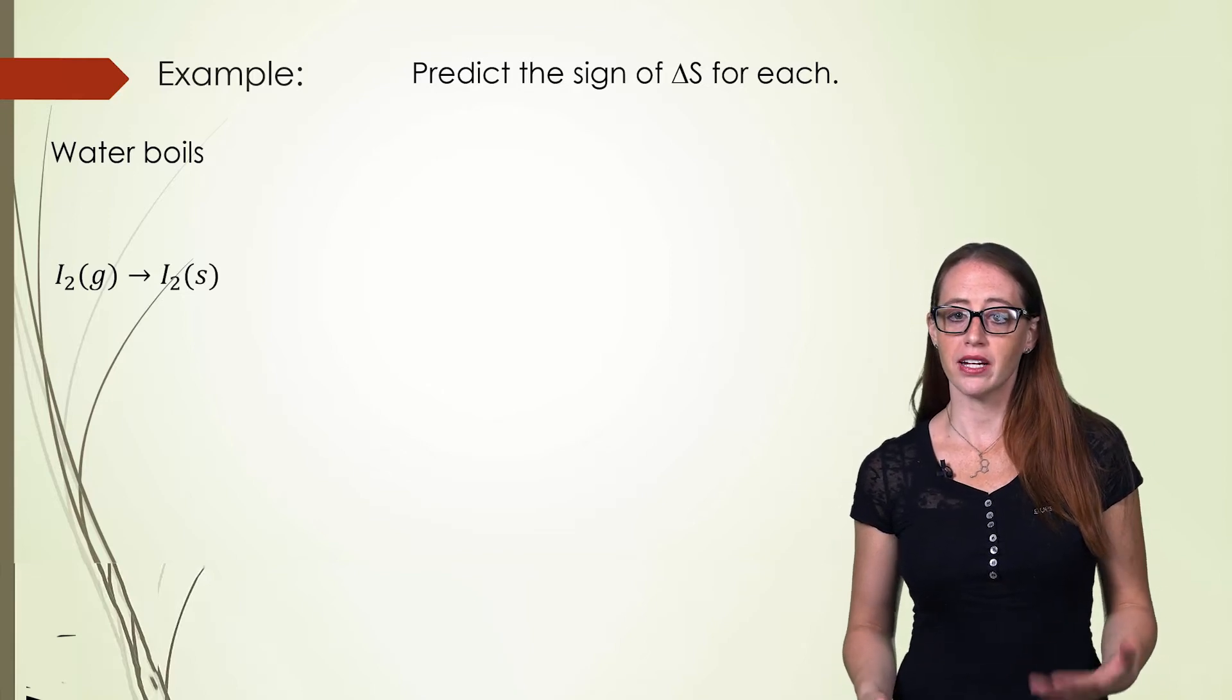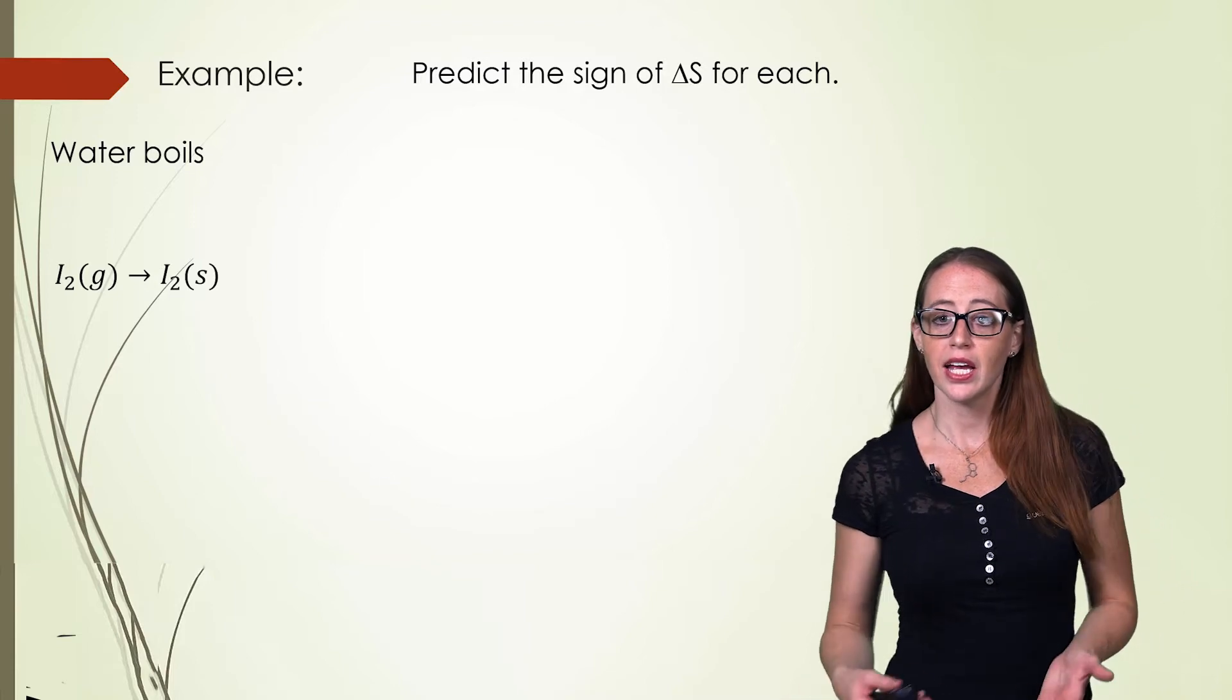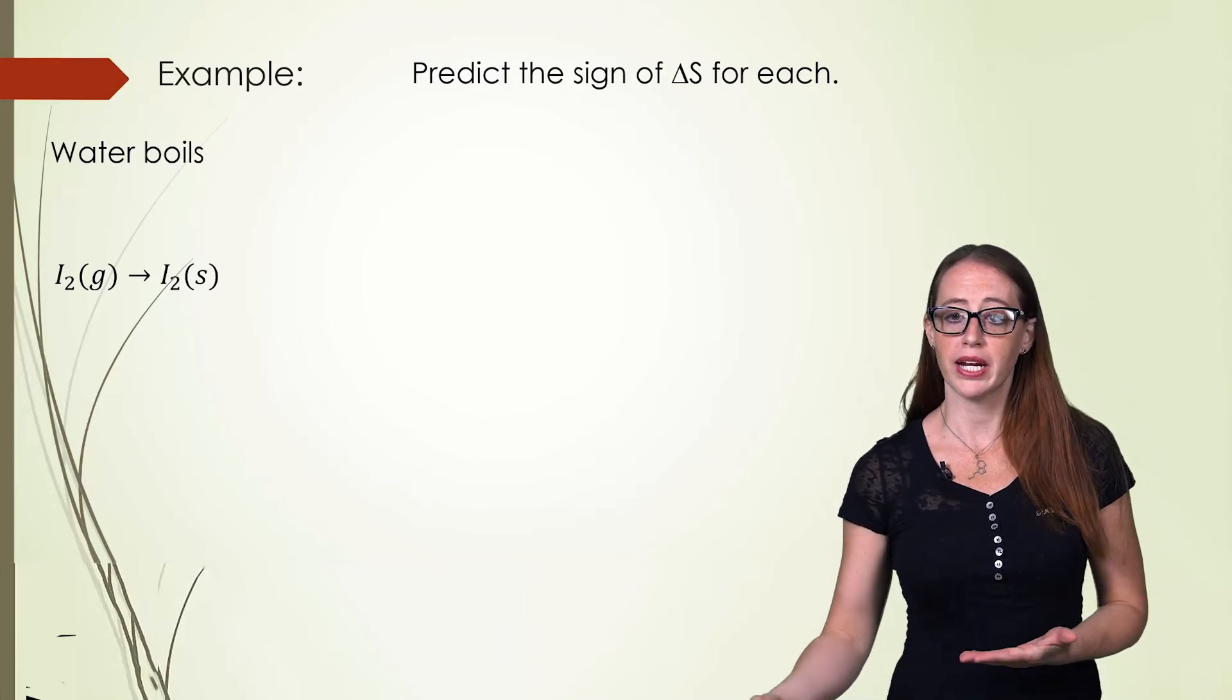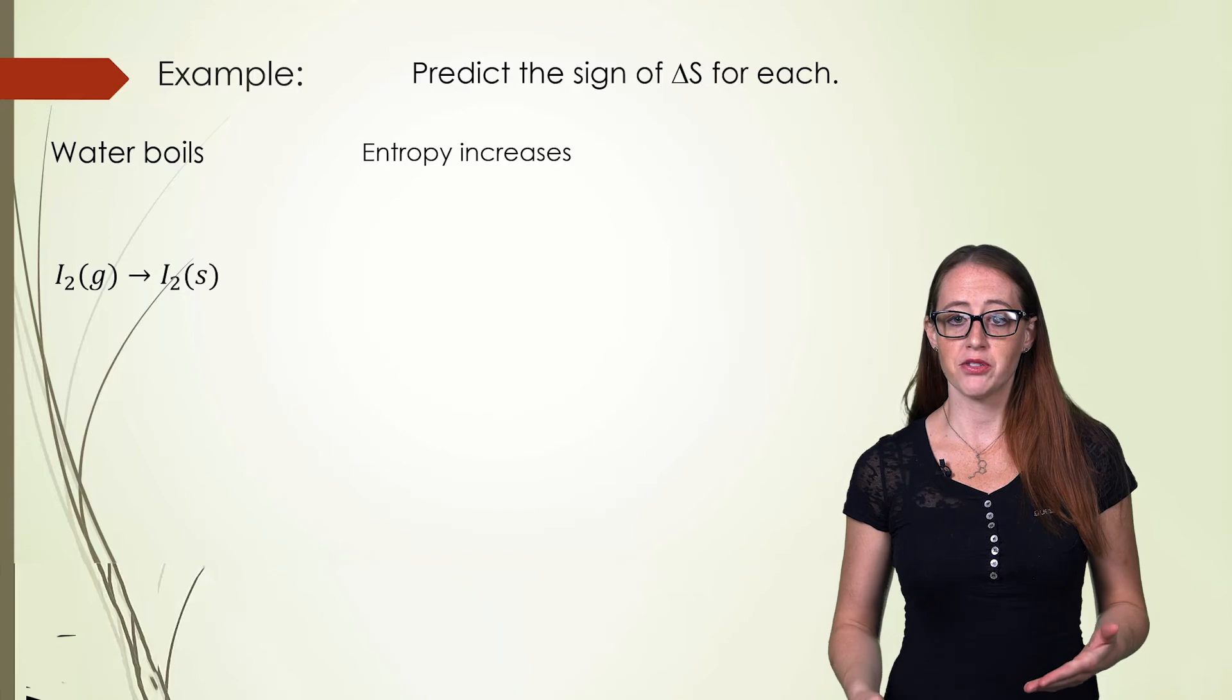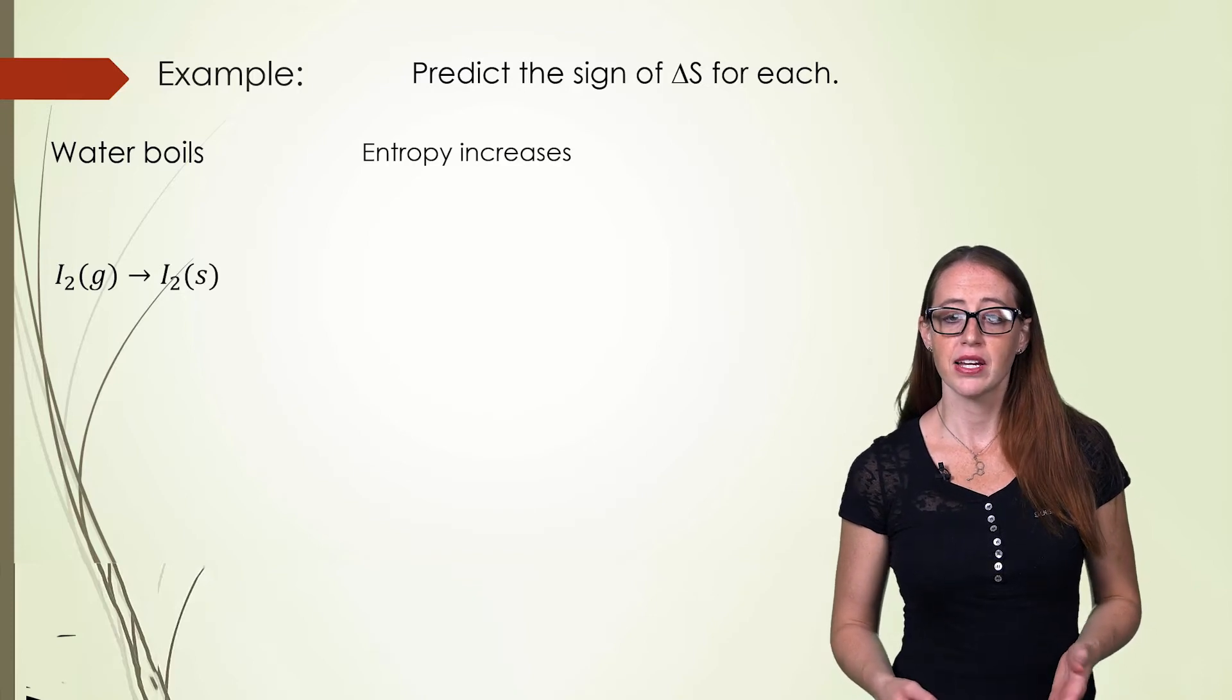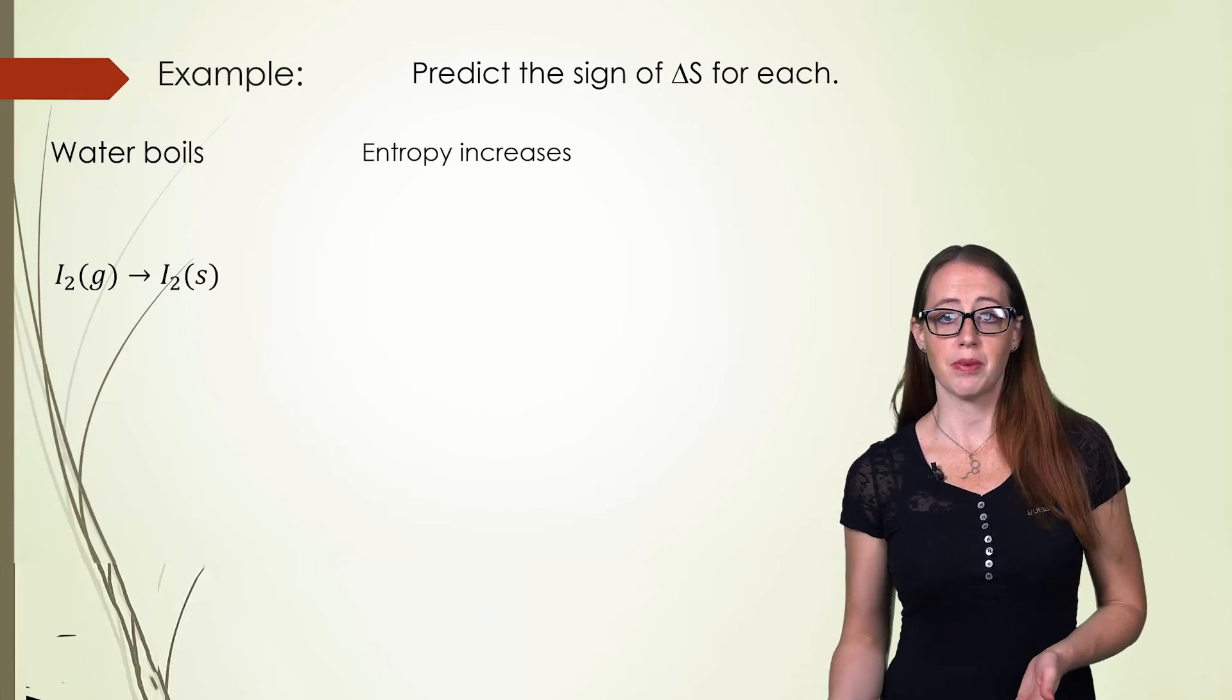It's going from a liquid to a gas. In other words, it's becoming more random, meaning that entropy must increase. Since entropy is increasing, the sign of delta S is positive.